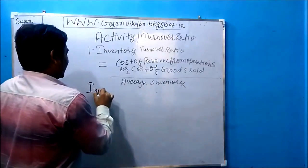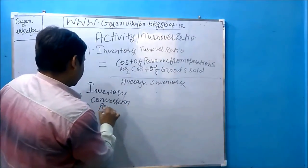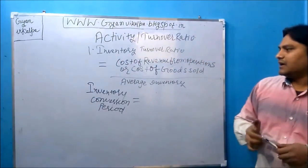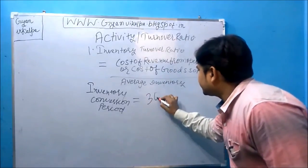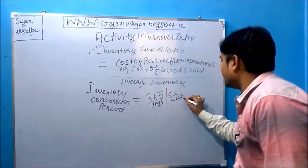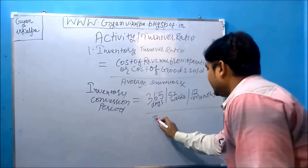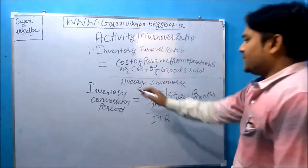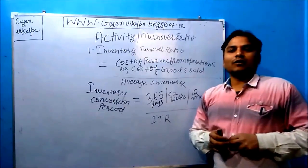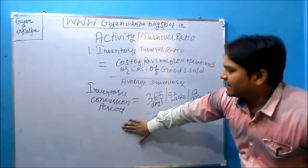Inventory conversion period is the time a company takes to convert its inventory into sales. The formula is 365 days upon inventory turnover ratio if calculating in days, 52 weeks if calculating in weeks, or 12 months if calculating in months. It represents the period required to convert raw material into sales.